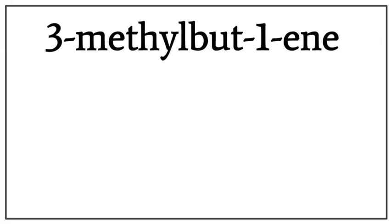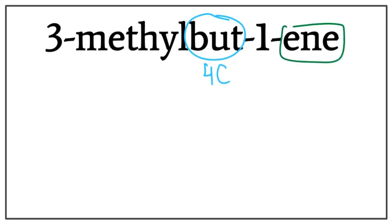Let's draw the structure for 3-methylbut-1-ene, or 3-methylbutene. But tells us that there are four carbons present in the longest carbon chain. Ene tells us that this is an alkene, meaning that there is a double bond present between the carbons.